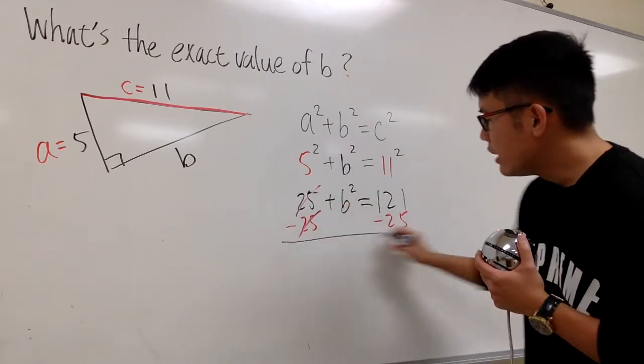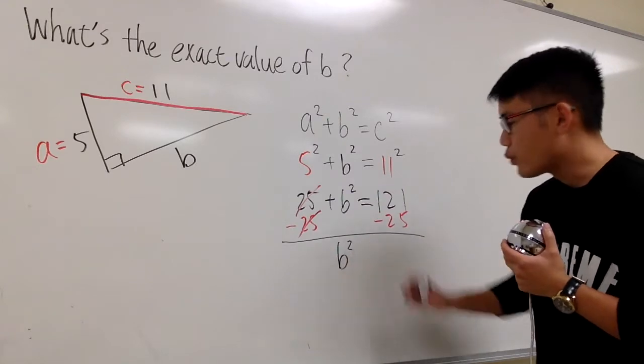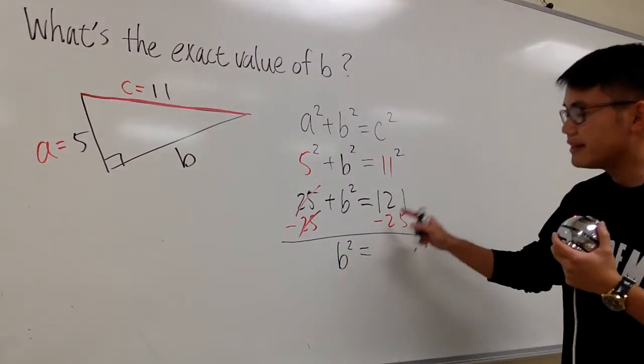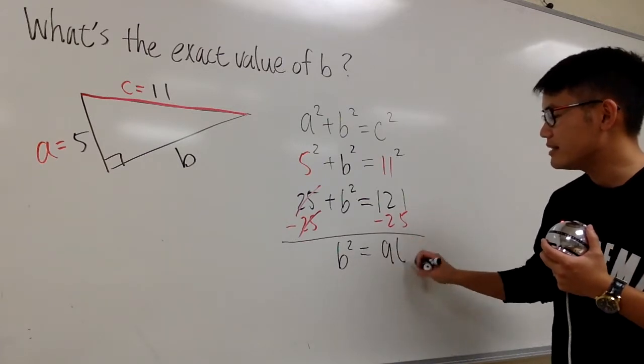Cancel, cancel, cancel, and then we get positive b², and this is equal to 121 minus 25, it's going to give us 96.